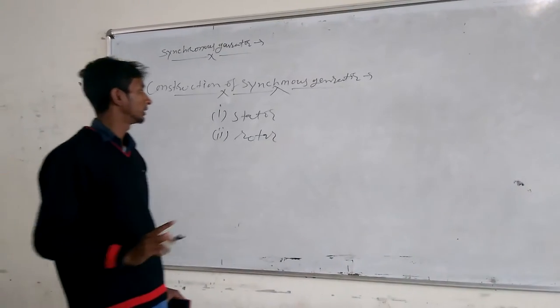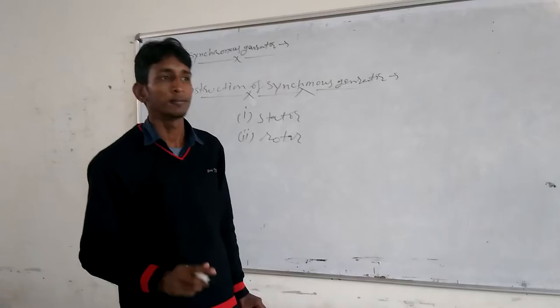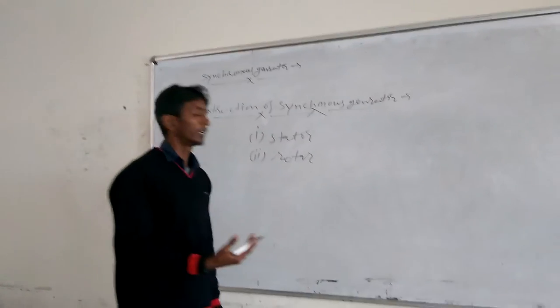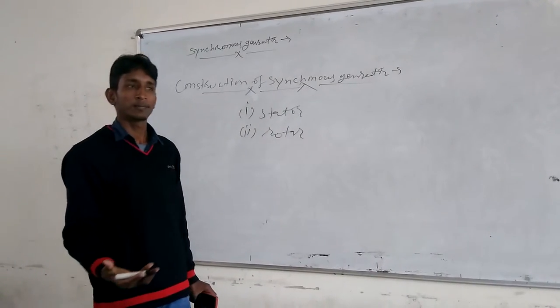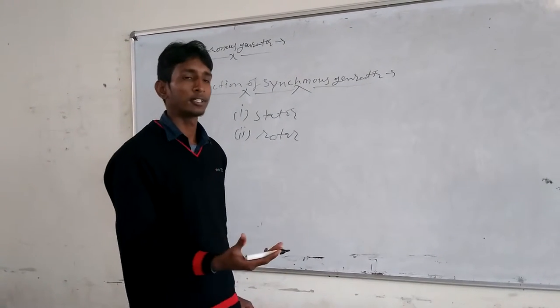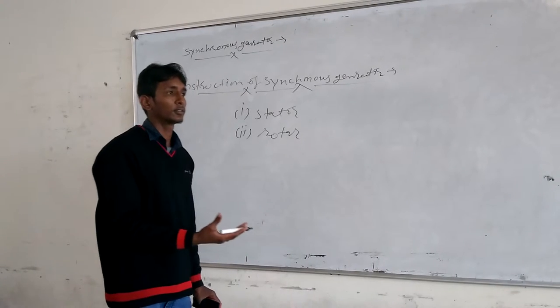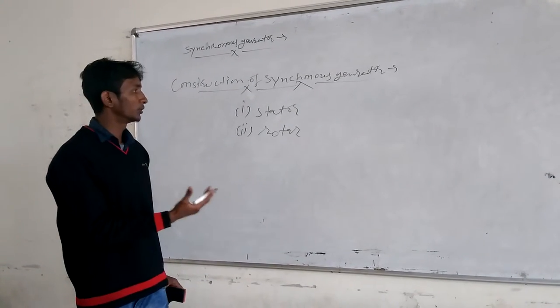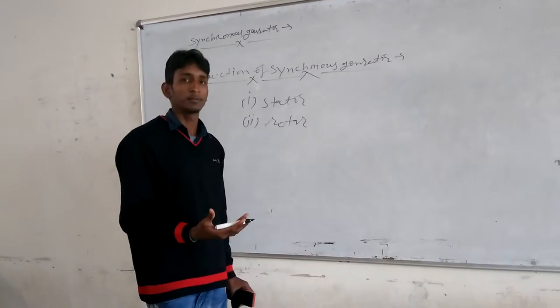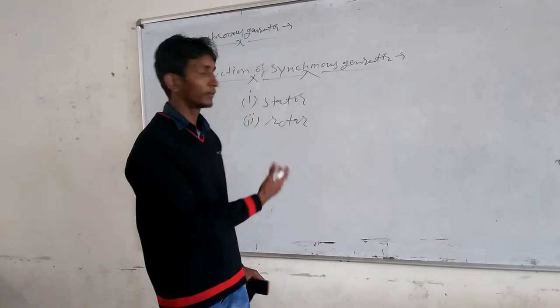First one is stator. Stator is the stationary part made of cast iron or cast steel. Slots are provided in the inner periphery. Slots are laminated as its winding placed on these slots. Laminations are used to reduce eddy current. Three-phase winding used in stator.